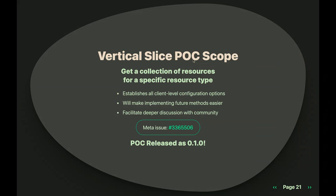For the vertical slice POC, which we completed a while back, we focused on getting a collection of resources for a specific resource type — get all your pages, get all your articles, get all your recipes. We were trying to make it a slice that was pretty deep as far as the configuration options, so we did at least an initial implementation of all our different configuration options. That gave us enough to publish something that works for a specific use case and gave us a good base to expand on, but most importantly it gave us a way to get community feedback — people could get hands-on, try it out, and let us know where they thought we were going.